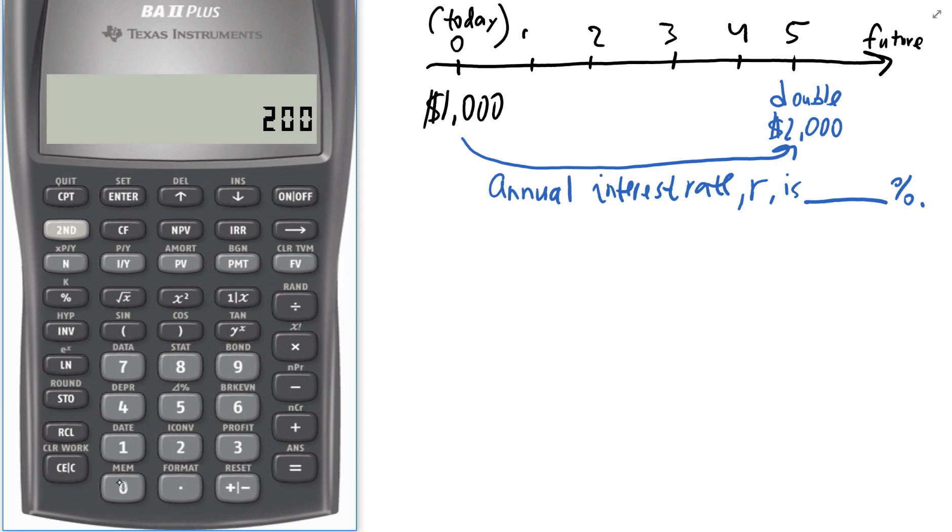So $2,000 is our future value. And notice how I did not change the sign for it. I left it as is, as a positive value.